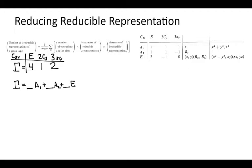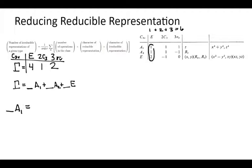To find the number of irreducible representations of a given type — let's start with A1 — that coefficient equals one over the order. The order in this point group is the total number of operations: one E plus two C3s plus three sigma Vs, which is six. We can also find this as the sum of squares of the dimensions: one squared plus one squared plus two squared also equals six. So the order equals six.